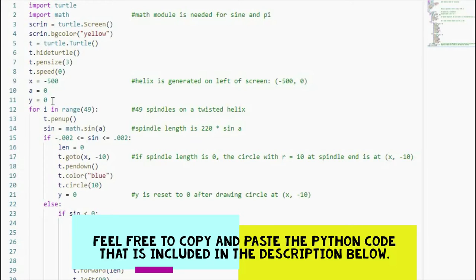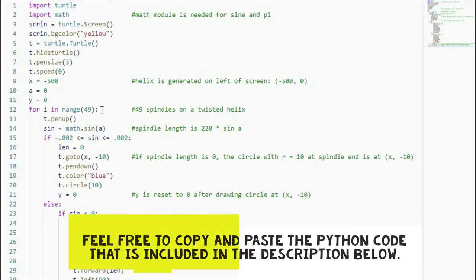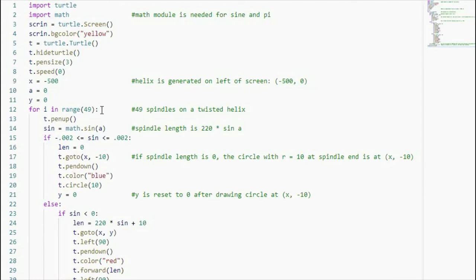The vertical coordinate of the x and y axis. Now why is the range here 49 for the loop? Because I am drawing 49 spindles on a twisted helix so that you can see the helix. I made sure that there are many spindles so that the helix is well defined.